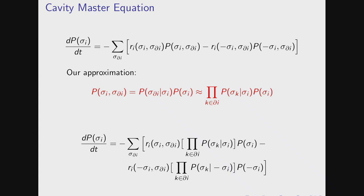This is our approximation. We take this joint probability distribution and write it as a conditional probability distribution multiplied by a one-point probability function. Up to there, you are quite fair. Then we make an approximation: we say this conditional probability can be factorized. The intuition is as follows: if you have spin i here and all your neighbors, what you say is the conditional probability on this spin, given that spin i is fixed, is independent of what is happening elsewhere. All the conditional probabilities become independent when i is fixed.